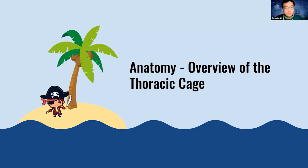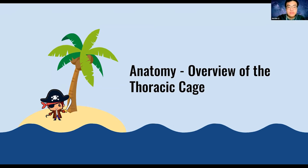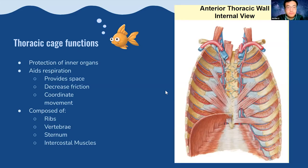Now covering anatomy lectures for the week, starting with the thoracic cage, then heart embryology and adult heart anatomy. The main functions of the thoracic cage are to protect the inner organs, facilitate respiration by providing space for the lungs, decrease friction for lung movement, and coordinate lung movement using muscles.